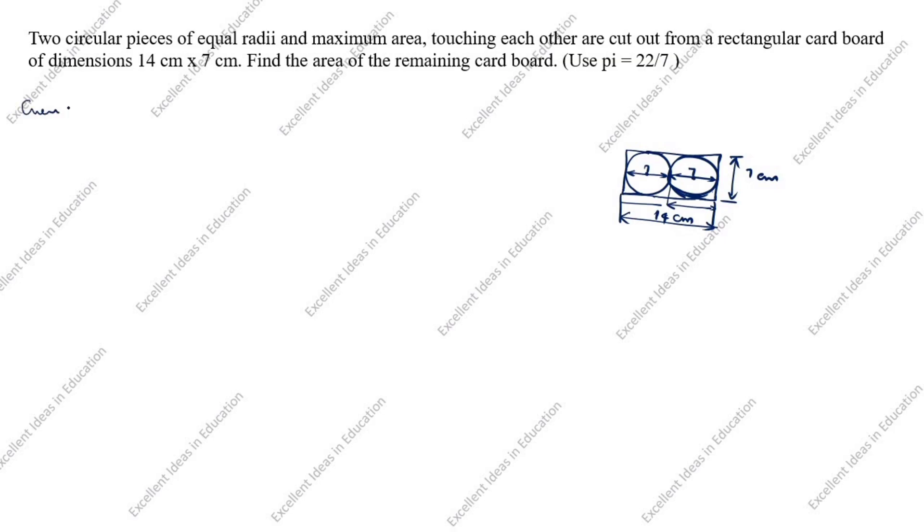Given data: diameter is given as 7 centimeter, so radius is 7 by 2 equal to 3.5 centimeter.